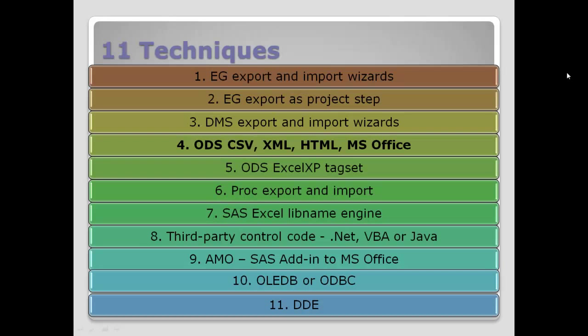Here are the full 11 techniques that we're talking about through the series. This is the fourth one, where we're going to talk about ODS, or Output Delivery System, and a range of different techniques we have clumped together here, including CSV, XML, HTML, and MS Office.